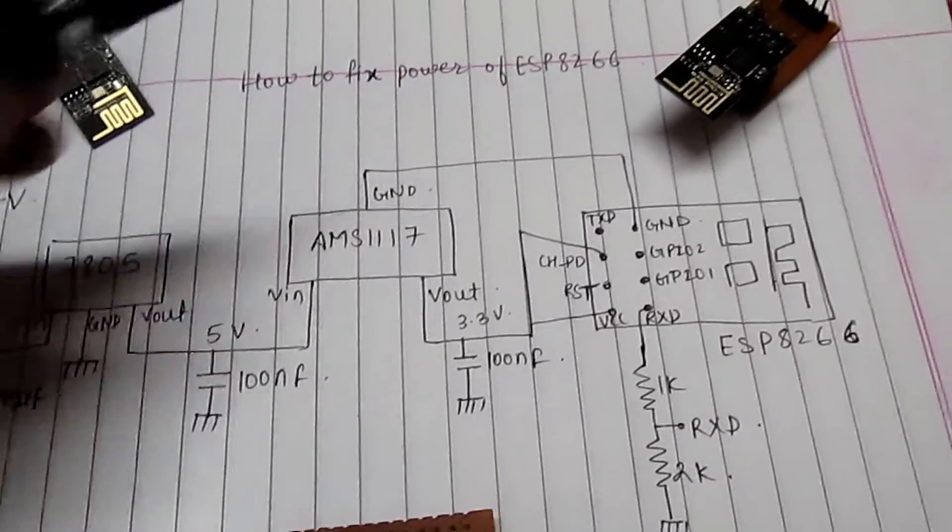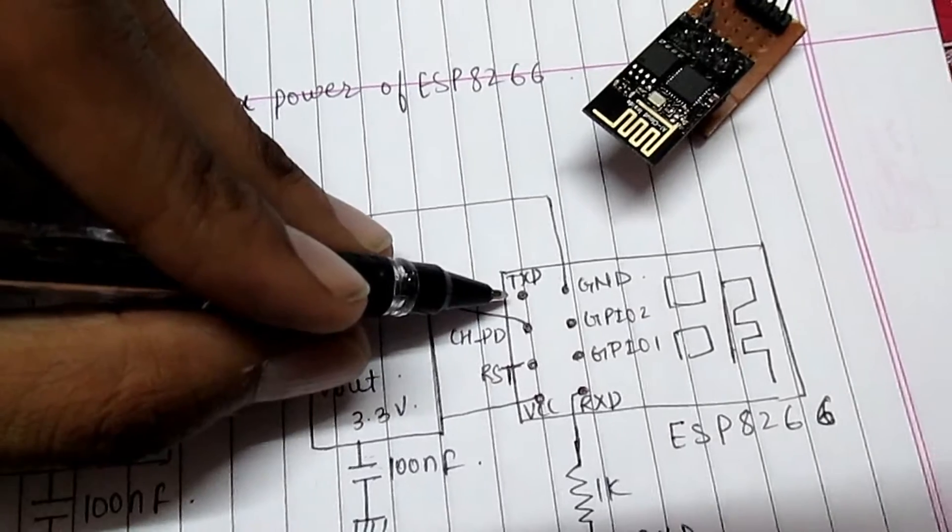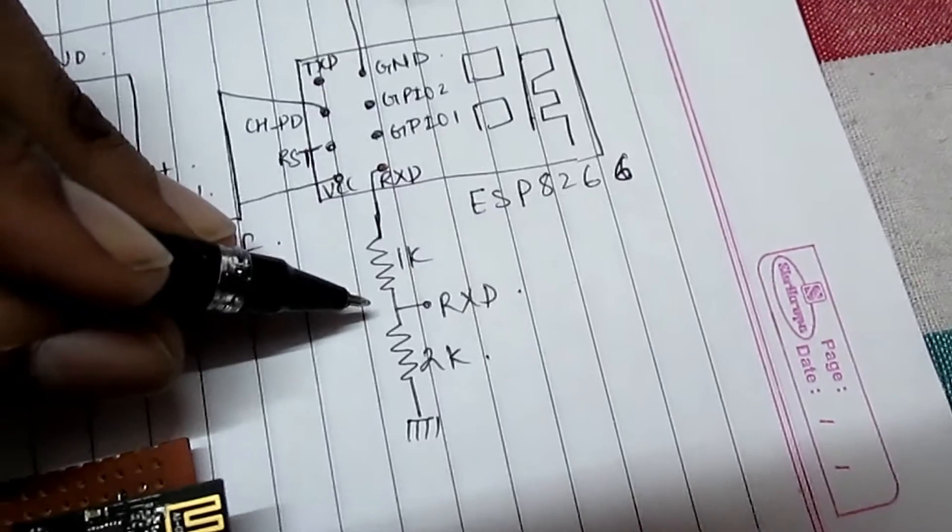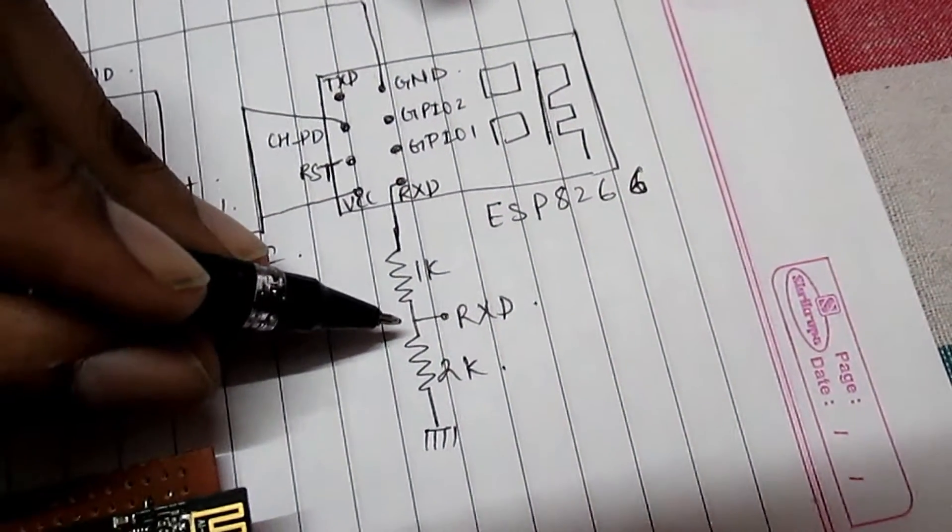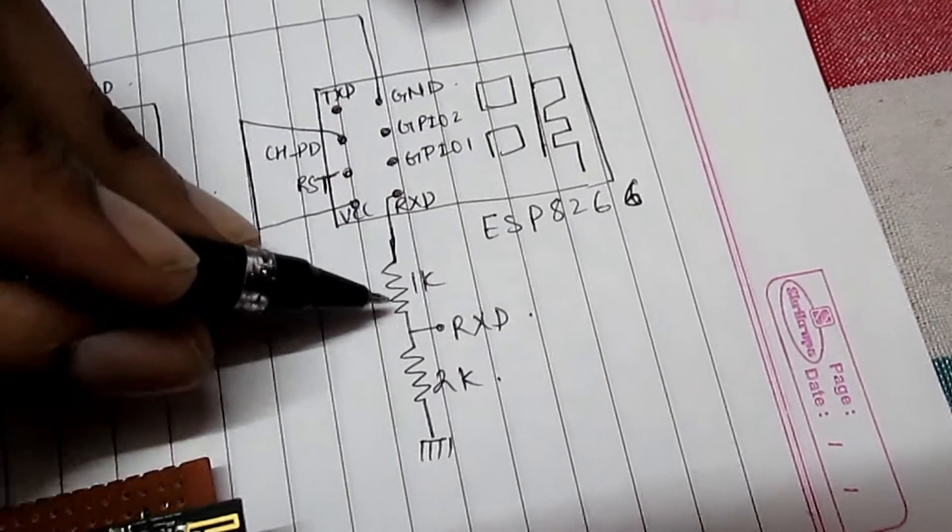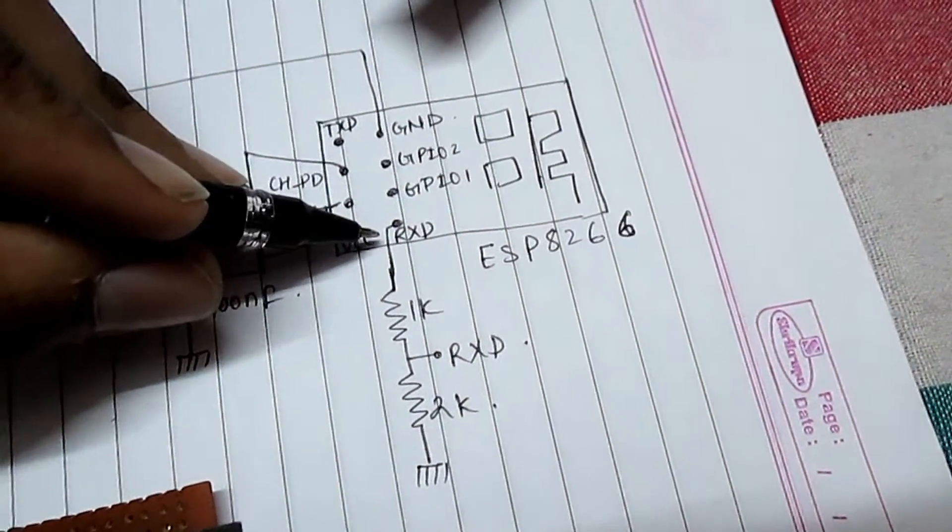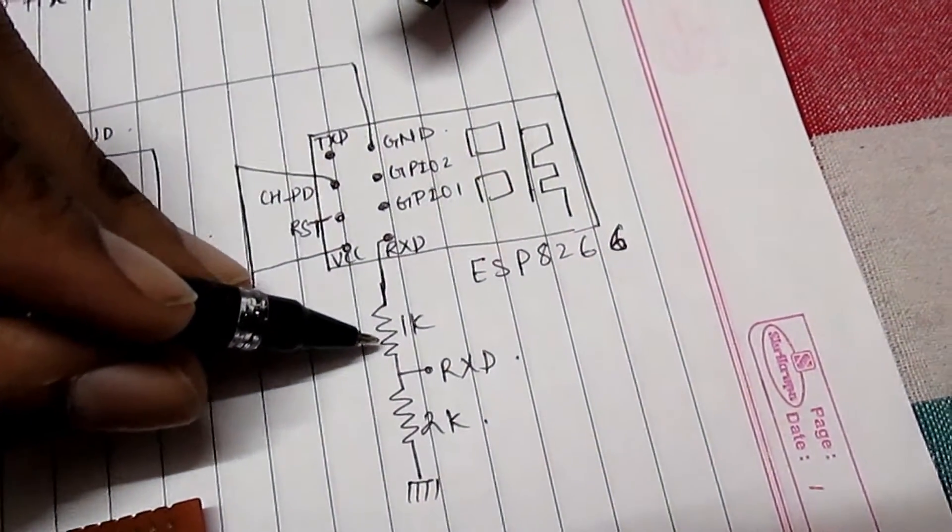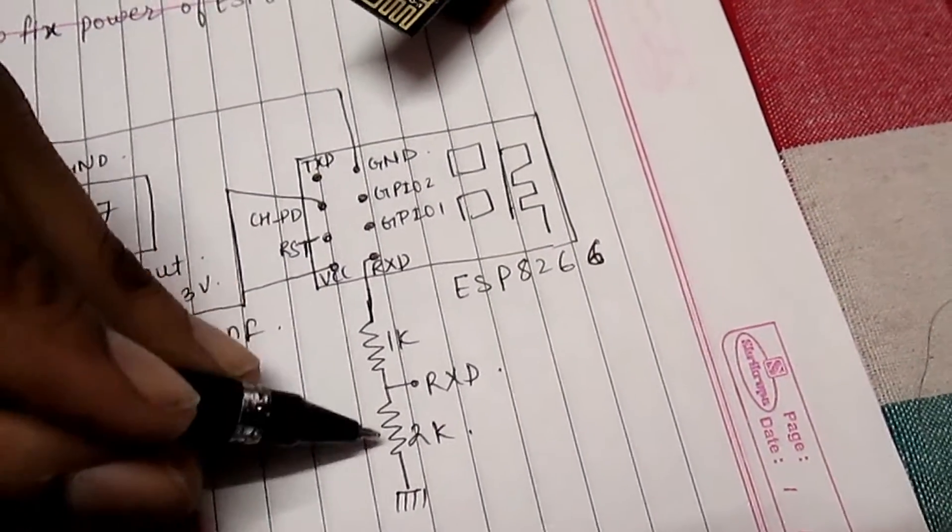This TXD pin is connected to the RXD pin of the Arduino, and these resistors are to shift the voltage level. As we all know, Arduino UNO gives 3.3 volts which will directly connect with the RXD pin by which ESP may get damaged. So to overcome this, these resistors are used to shift it down: 1k and 2k.